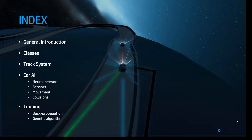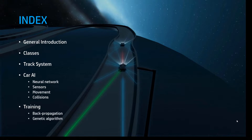Firstly, I will have the track system, which is for measuring how the cars are positioned using trilateration with GPS positioning. Then I will talk about the main structure, which is the car artificial intelligence, where each car has its own neural network, its own sensors, movement, and collisions. Finally, I will talk about the backpropagation and genetic algorithm training, which I have explained in other videos and on my blog.